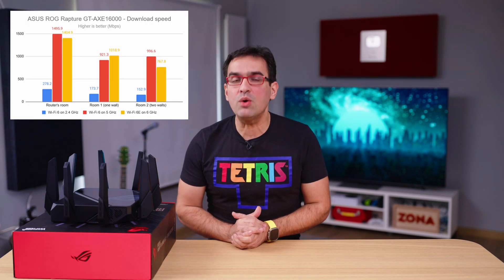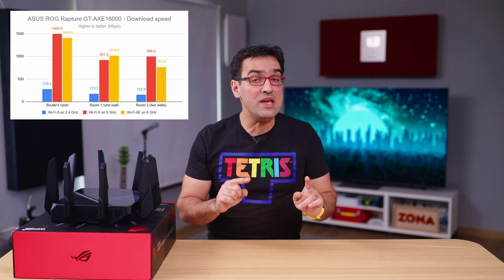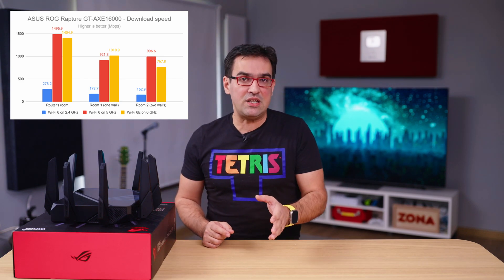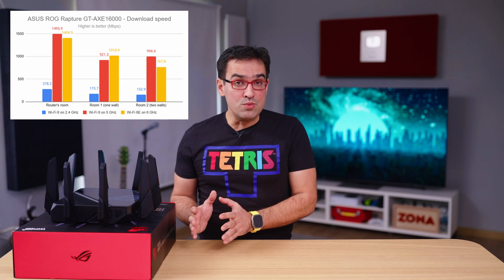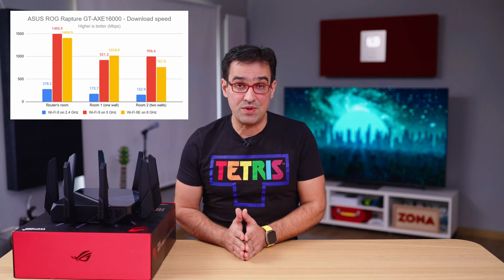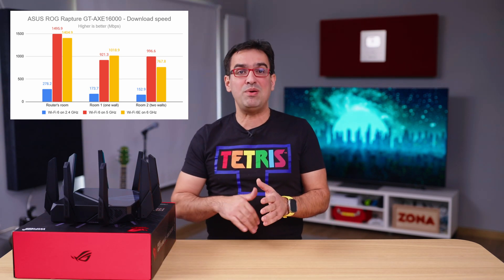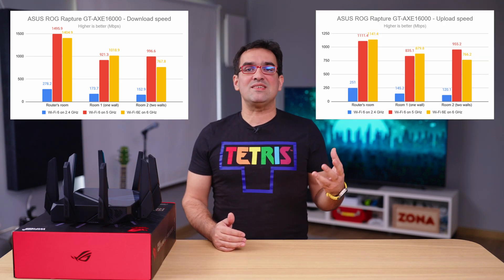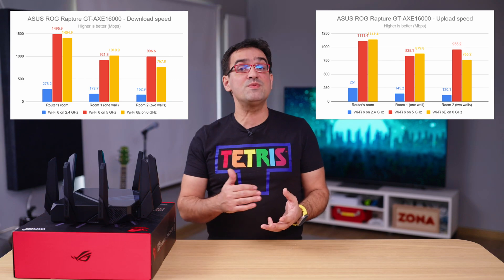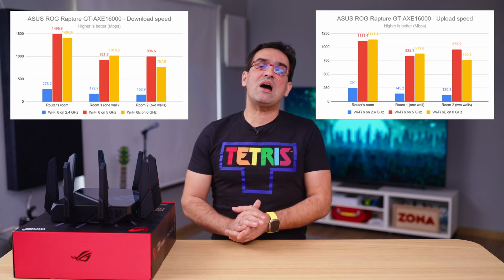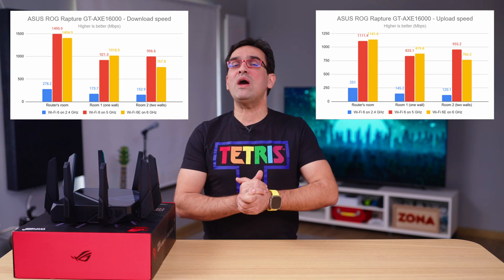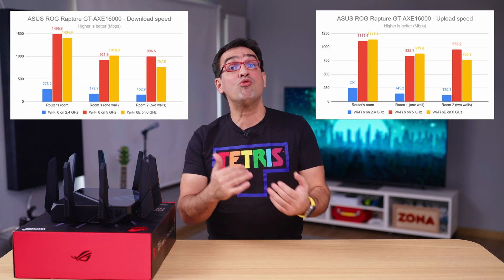To compare the speed of 6e vs 6, we used Passmark Performance Test to transfer data between two computers connected to the network. The average download speed offered by the Rapture was higher when using Wi-Fi 6e only in Room 1, which is separated from the router by one wall. In all other rooms, Wi-Fi 6 delivered faster downloads. The difference was significant in Room 2, separated from the router by two walls, with the second being rather thick. The upload speed offered by Wi-Fi 6e was faster in rooms closest to the router; however, Wi-Fi 6 delivered faster uploads in Room 2.